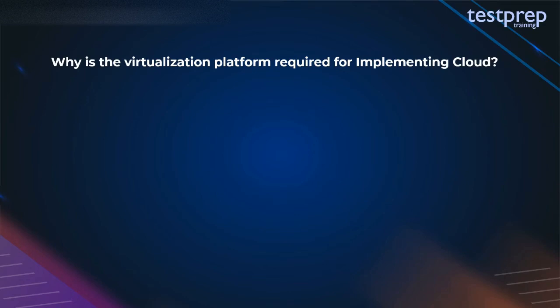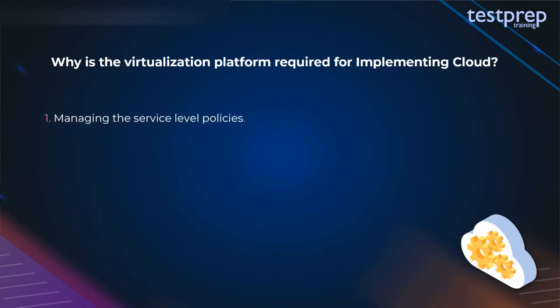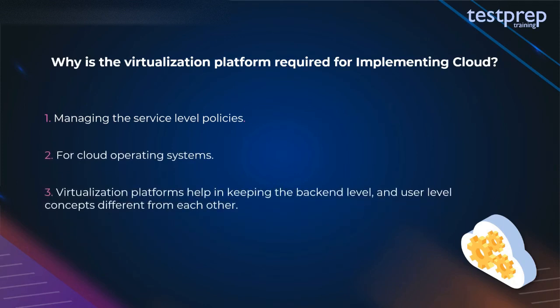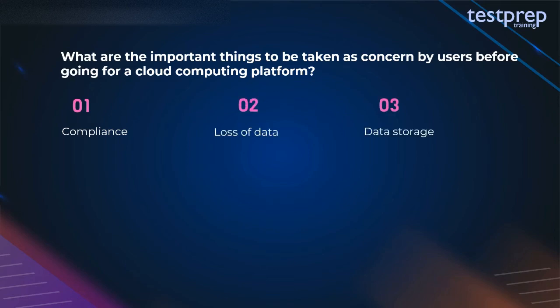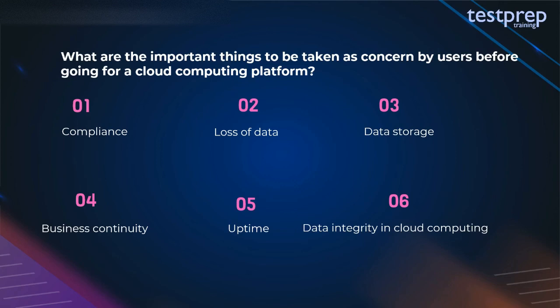Question 29: Why is a virtualization platform required for implementing cloud? The requirement of a virtualization platform in implementing cloud is for: first, managing service level policies; second, for cloud operating systems; third, virtualization platforms help in keeping the backend level and user level concepts different from each other. Question 30: What are the important things users should consider before going to a cloud computing platform? The essential things include: first, compliance; second, loss of data; third, data storage; fourth, business continuity; fifth, uptime; sixth, data integrity in cloud computing.